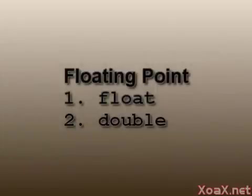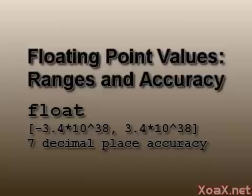There are two main types to represent general floating point numbers: the float and the double. The float was the original floating point type and can represent values between plus or minus 3.4 times 10 to the 38 with 7 digits of accuracy.